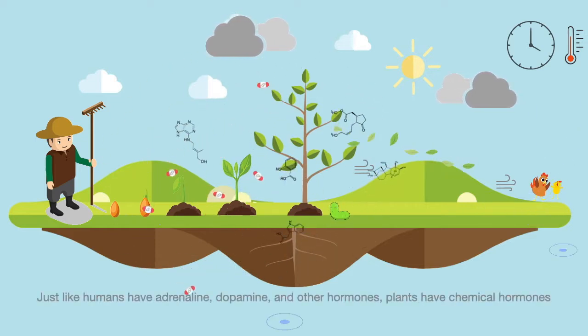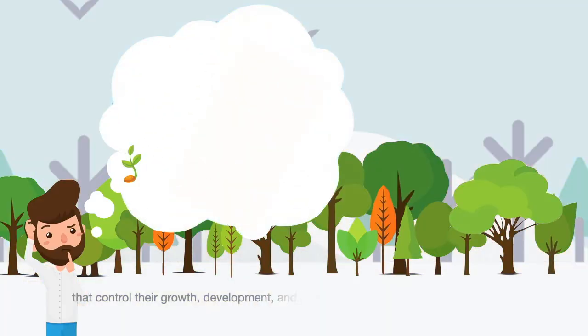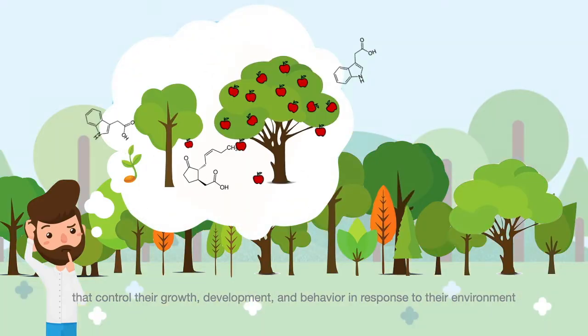Just like humans have adrenaline, dopamine and other hormones, plants have chemical hormones that control their growth, development and behavior in response to the environment.